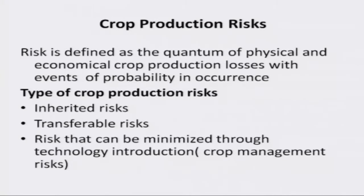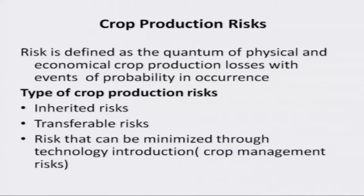We have to adapt to climate and weather, and for that we have to adopt certain strategies. Crop production risk must be defined. According to economics, risk is defined as the quantum of physical output loss — for example, getting one ton per hectare against an expected three tons — and economical crop production losses, such as getting 2,000 rupees against an expected 10,000 rupees. So, risk is the quantum of physical and economical crop production losses from events such as drought or flood, which have a probability of occurrence.